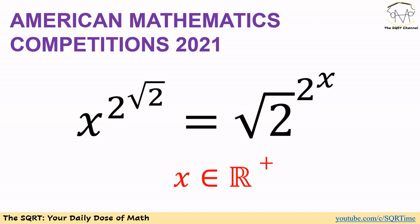Hello everyone, welcome to the security channel. In this video we have a very interesting problem from the American Mathematics Competitions from 2021. In this problem, x to the power of 2 to the power of square root of 2 is equal to square root of 2 to the power of 2 to the power of x. We are looking to find x belonging to the positive real numbers, and we want to find the sum of all positive real numbers satisfying this equation. Make sure you pause the video to think about this problem.